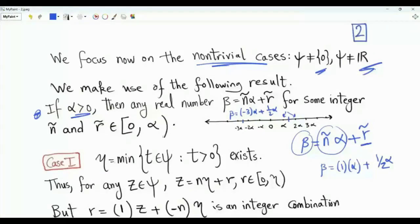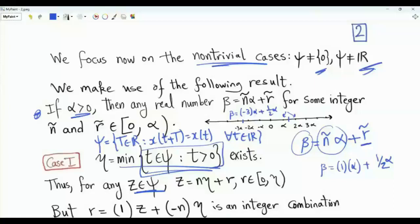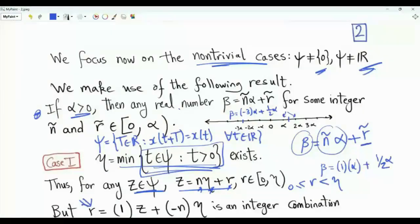To get the non-trivial cases of psi, we focus on the set of positive real numbers in psi. Psi is the set of T in R such that x(t + T) = x(t) for every t in R. We ask: does the set of positive elements of psi have a minimum? Suppose the set has a minimum and this minimum is eta. Take any z in psi. Eta is a positive number — the minimum of this set, and z is a real number. By our result, we can write z as eta times an integer n-tilde plus r, where r is greater than or equal to zero but strictly less than eta. We can write r as 1 times z plus minus n-tilde times eta.